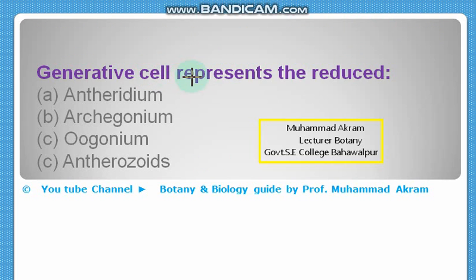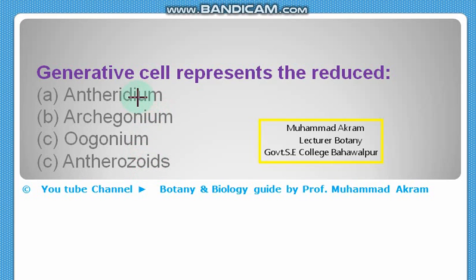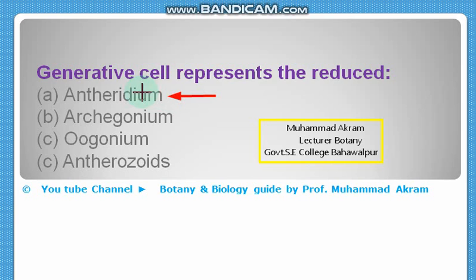The generative cell represents the reduced — antheridium, archegonium, oogonium, or antherozoids? The generative cell represents the reduced antheridium. The right option is option A — antheridium.